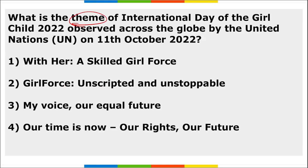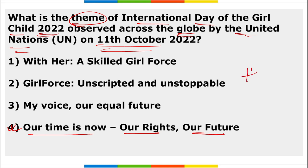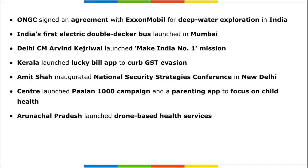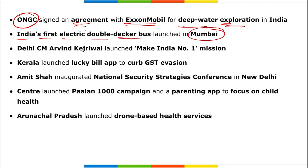The theme of the International Day of the Girl Child 2022, observed on 11th October, was 'Our Time Is Now — Our Rights, Our Future.' ONGC signed an agreement with ExxonMobil for deep water exploration in India. India's first electric double-decker bus will be launched in Mumbai.